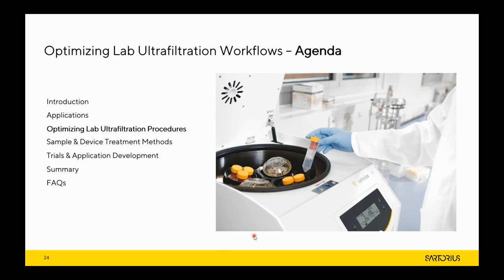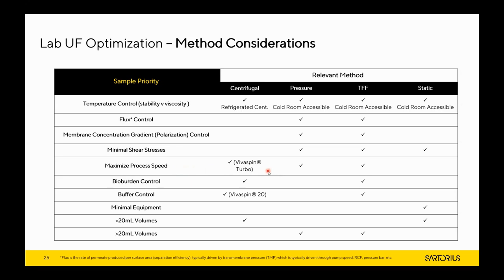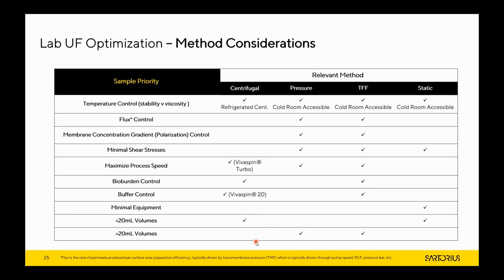Now, having painted a picture of the key applications, let's do a deeper dive into what to choose to optimize. When it comes to method selection — whether centrifugal, pressure, TFF, etc. — it really depends upon your sample priority. If temperature control is critical, use a refrigerated centrifuge device or place a TFF or static device in the cold room. If flux control is important, pressure and TFF work well. For maximum process speeds, look to the VivaSpin Turbo devices and TFF for larger volumes. If you need bio-burden control, centrifugal devices are preferred. There are too many specific points to cover all of them here, but the webinar recording is available to revisit these recommendations.